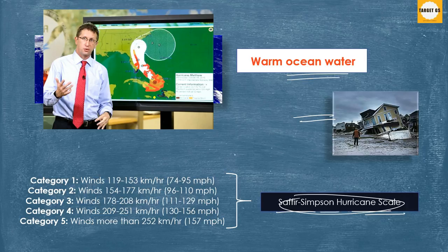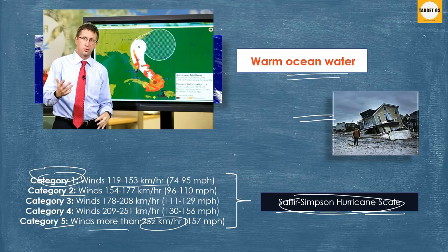The scale of categories is called the Saffir-Simpson hurricane scale — this you have to remember. The categories are based on wind speed. For example, category 1 has wind speeds of 119 to 153 km per hour, followed by category 2 through category 5. Category 5 has winds of more than 252 km per hour.